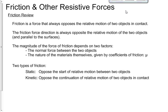So we'll start with friction. Friction is a force that always opposes the relative motion of two objects in contact. They'll always try and stop the motion from happening. The friction force direction is always opposite the relative motion of the two objects and parallel to the surfaces.